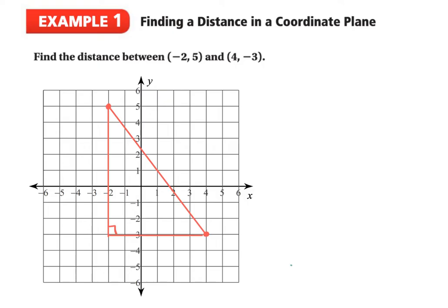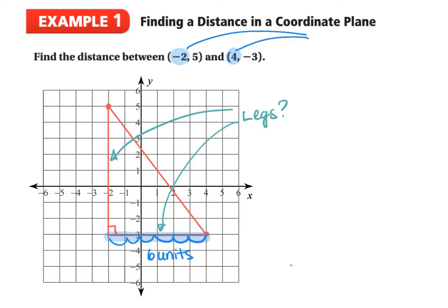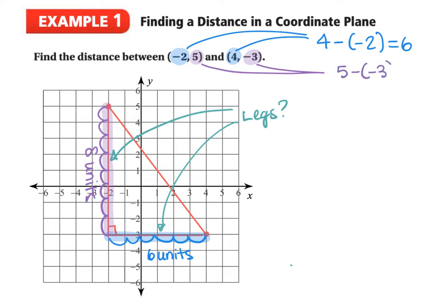In order to find the hypotenuse, we first need to determine the length of the two legs of this right-angled triangle. On a coordinate plane, we can see we have a horizontal distance of 6 units. Mathematically, we find the difference between our x-coordinates: 4 and negative 2. So, 4 subtract negative 2 gives us 6. For the vertical distance, we have 8 units apart — that's the difference in the y-coordinates: 5 subtract negative 3, which is also 8.